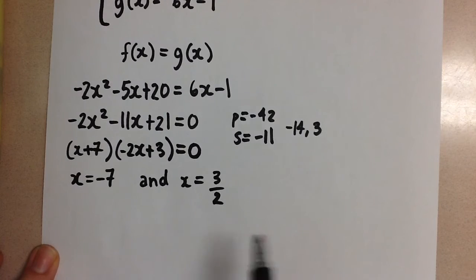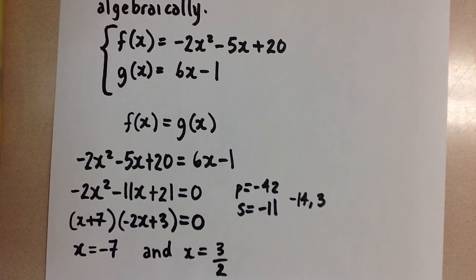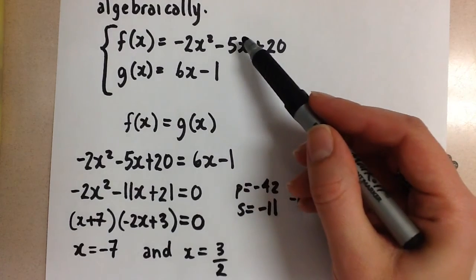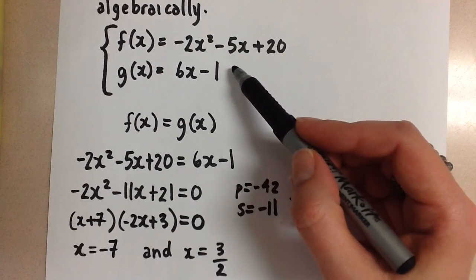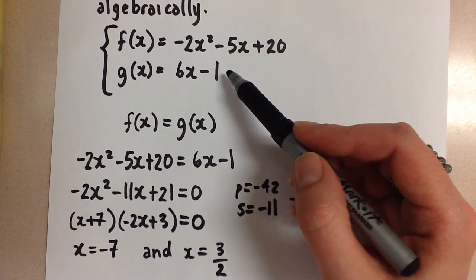So we need to find the corresponding y values for this. To do that, we're going to take each x value and sub it back into either one of these two equations that we were given because we know that those x values would satisfy both equations.